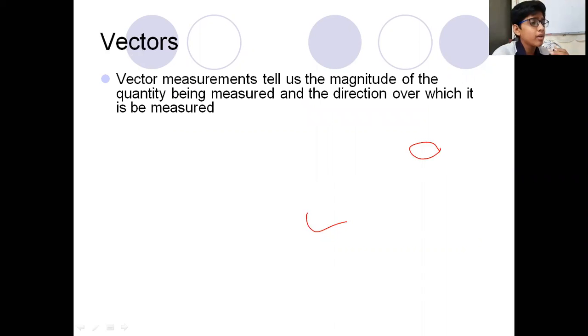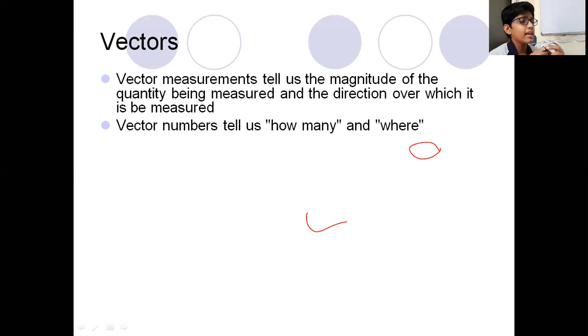Vector quantities or vector measurements tell us the magnitude of the quantity being measured and the direction over which it is measured. Vectors say magnitude and also the direction. I went 2 meters in the east, so this is what actually is displacement. I applied 3 Newton force in the north direction. These are vector quantities where we define even the direction for them. Vector numbers tell us how many and where, so they are discussing even about direction and the magnitude.